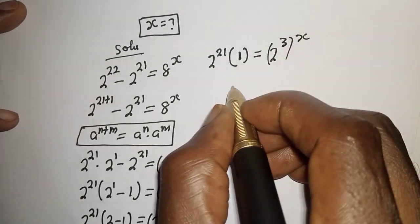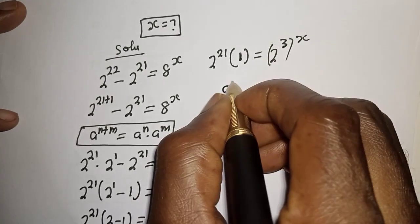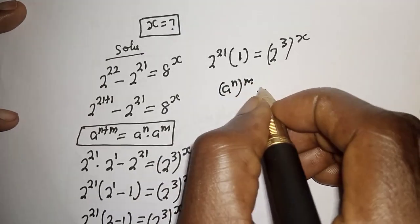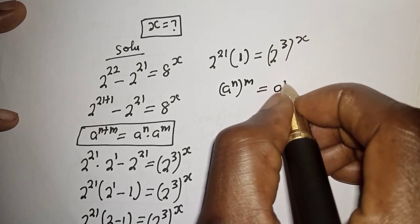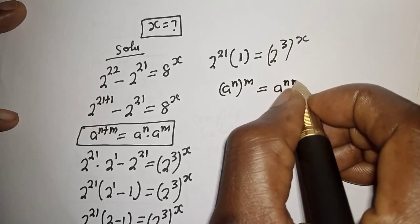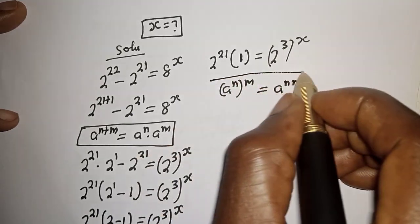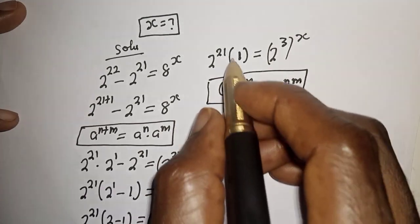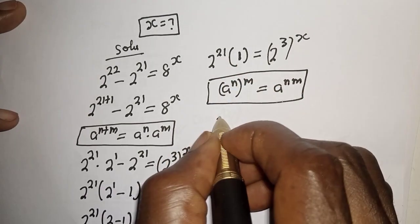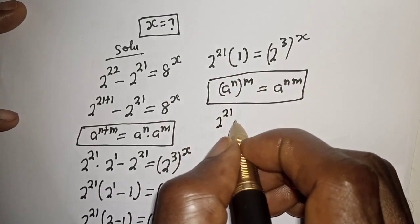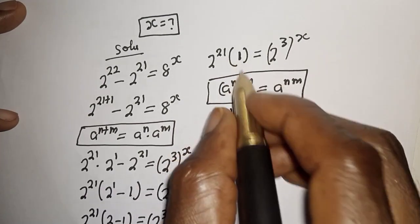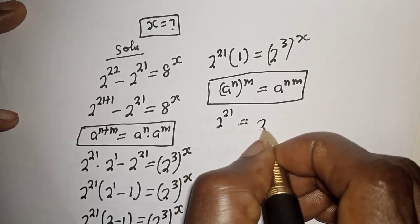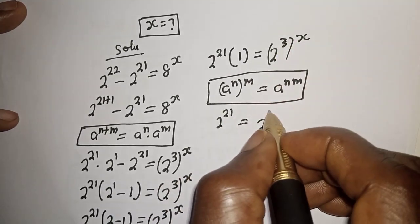Take note of this: if you have a raised to power n, to the power of m, it is equal to a raised to power n times m. Then here, 2 raised to power 21 times 1 is equal to 2 raised to power 3 times x.